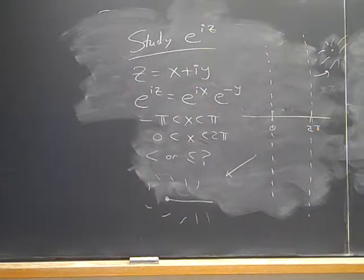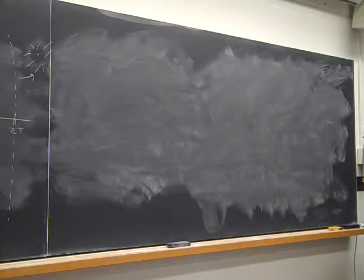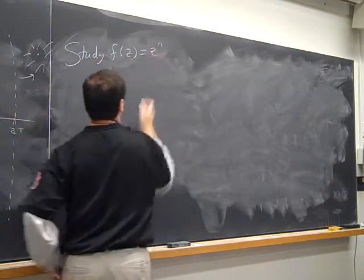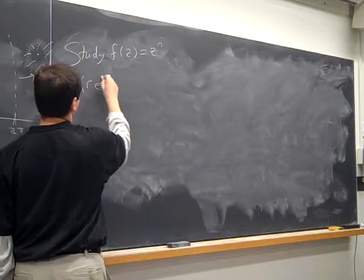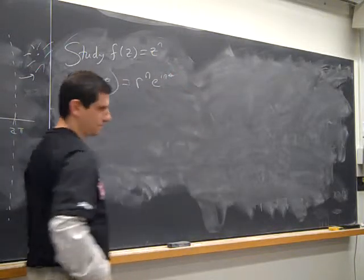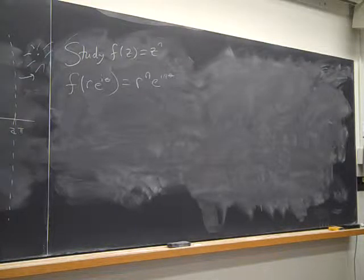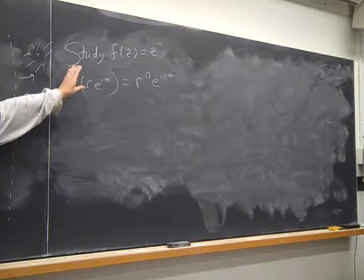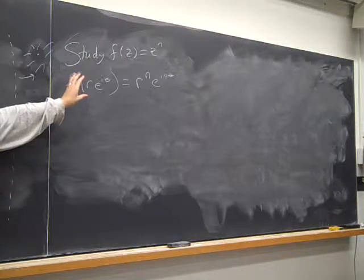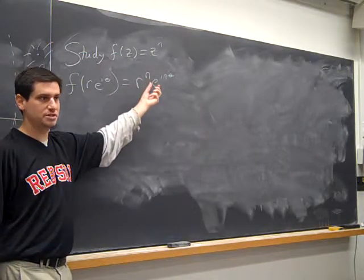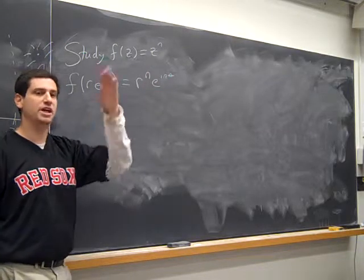The next map to study is f(z) = z^n. In all of these, the first thing to figure out is where to study them. Writing the input as r·e^(iθ), we get r^n · e^(inθ). It's much easier to understand in polar form — this is where we want to do things circularly. The map raises the radius to the nth power and increases the angle by a factor of n.